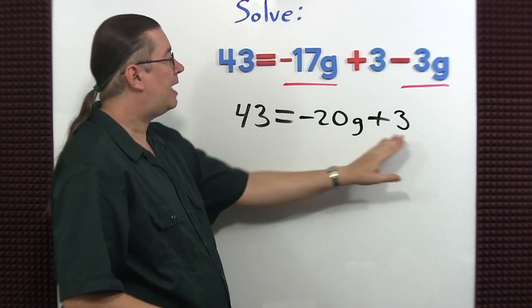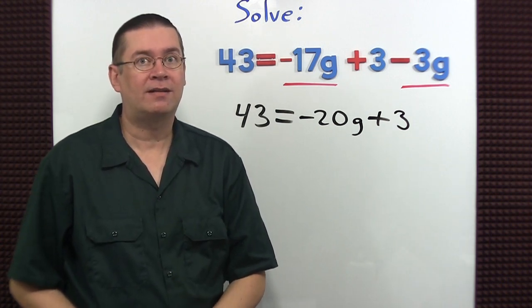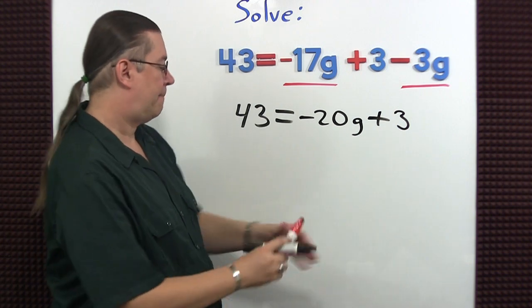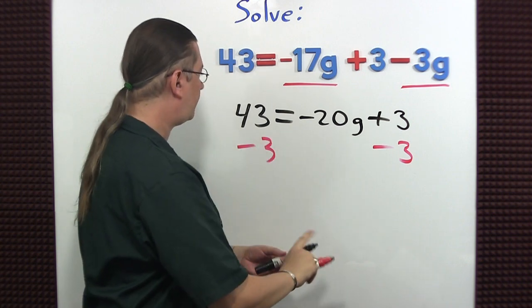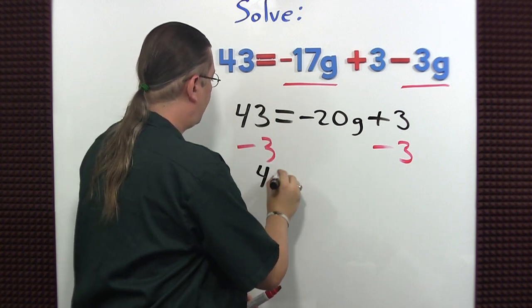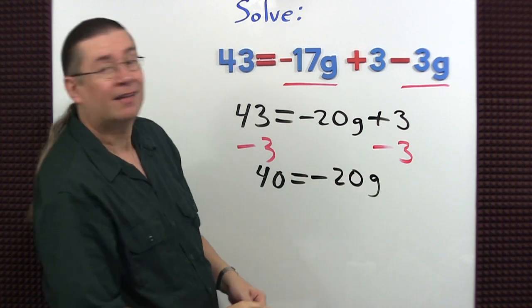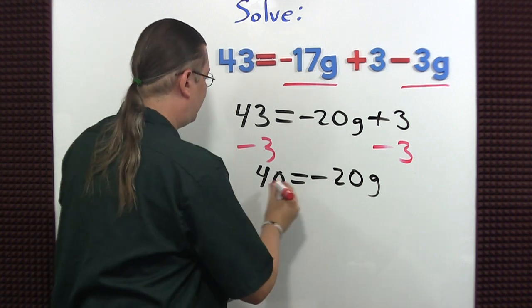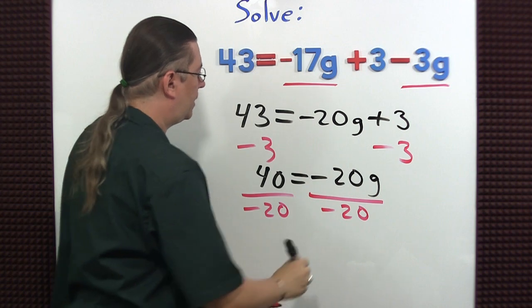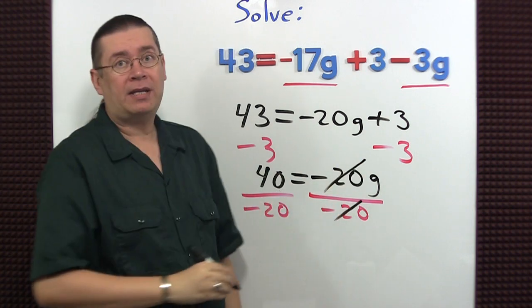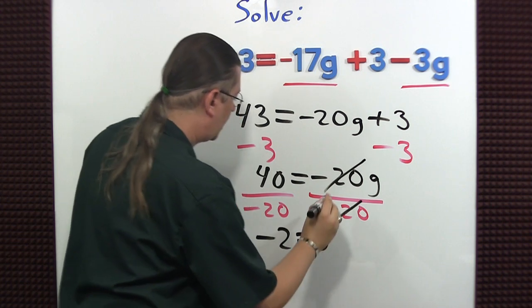g is being multiplied by negative 20 and I'm adding 3 to it. What's now the next step to solve the equation? We should subtract 3. 43 minus 3 is 40. The 3's go away. I'm left with negative 20g. Then we should divide by negative 20. 40 divided by negative 20 is negative 2. And then switch these around.